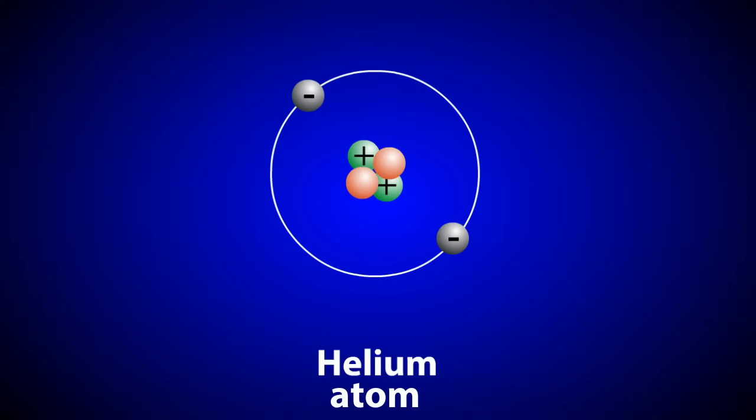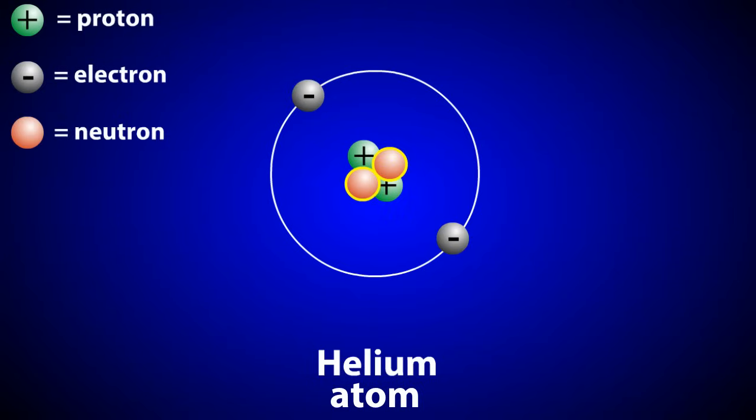Atoms are the fundamental unit of matter. They're made up of three types of subatomic particles: protons, which are positively charged; electrons, which are negatively charged; and neutrons, which have no charge. Protons and neutrons are located in the nucleus at the center of the atom, while the electrons orbit the nucleus.